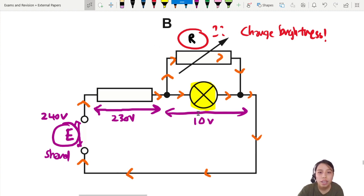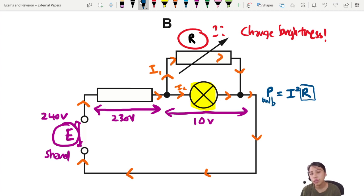Because once you change R, the current in the bulb, let's call this I1 and call this I2. I1 and I2 can be different and that will affect how bright the bulb is. Because you can think of this as P equals to I square R of a bulb. So power of bulb depends on how much current is flowing through it. If you assume the resistance is constant. So change brightness by affecting current through the bulb is for bulb.